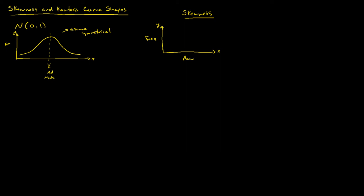It could be that you have shaped curves that look something like this, or a shaped curve that looks more like this. Whereas the standard normal curve is symmetrical — the curve looks the same on either side of the dotted line — these other two are skewed curves.